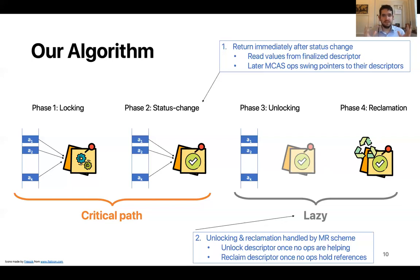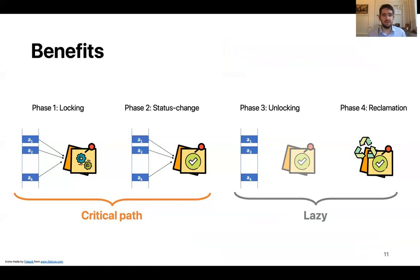Okay, this is at the high level the behavior of our algorithm. You might be wondering what benefits there are to this approach. So the first and most obvious benefit is that by removing the unlocking phase off the critical path, we have reduced the complexity of the critical path. And this is what we set out to do in the first place.